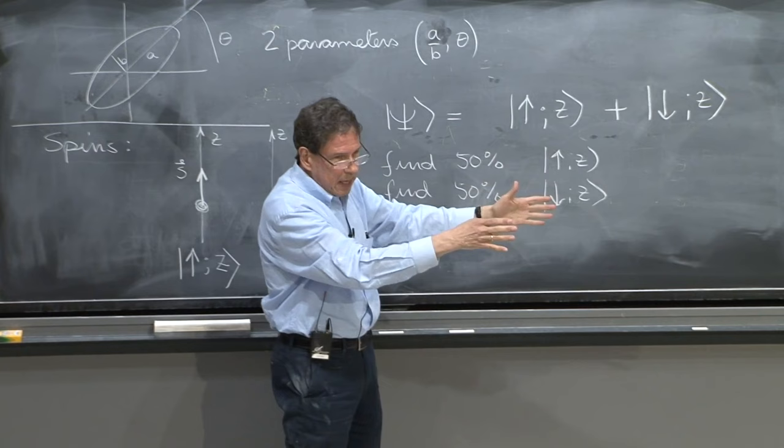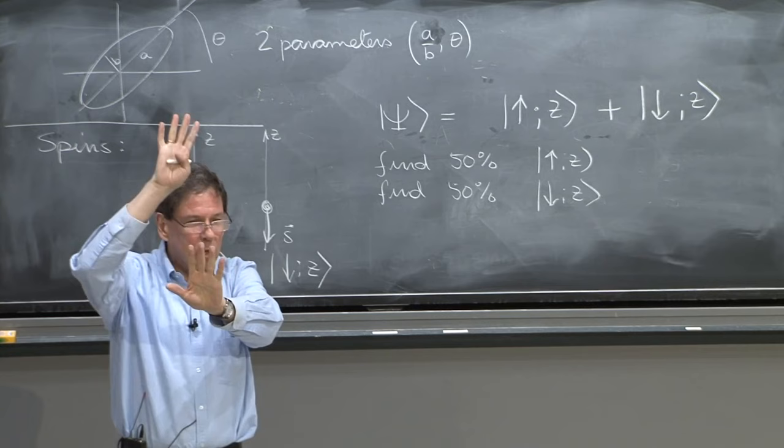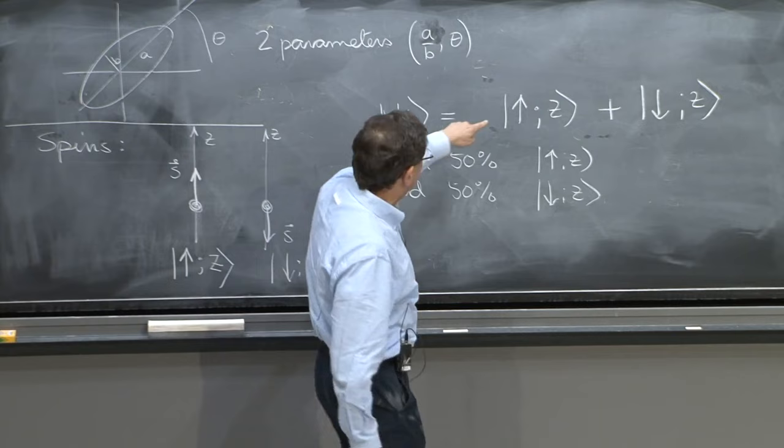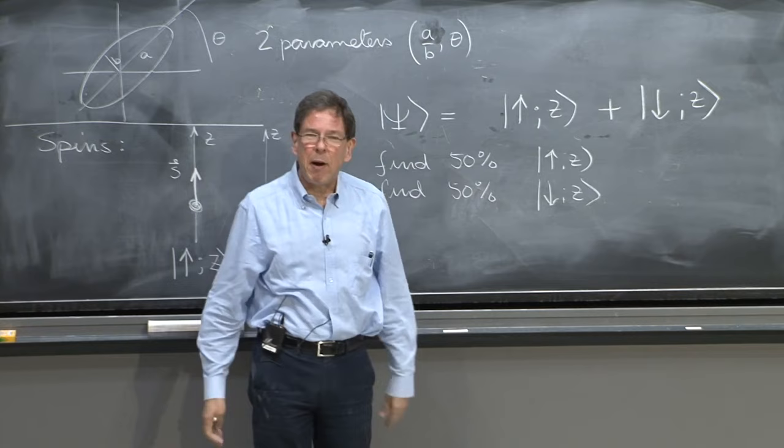And the result is going to be the same. So how do you know you really have this, as opposed to somebody has given you 1,000 particles, 500 up, 500 down? How can you tell?